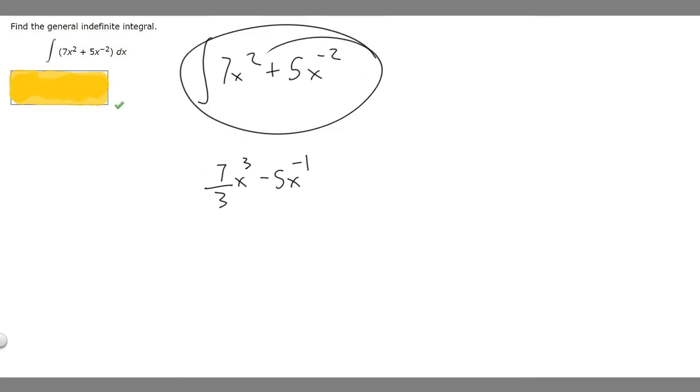Since we're taking the antiderivative, we've got to add a constant. So we add c to it. So when we add c, this is going to be our answer. The answer to this problem is 7 over 3 times x cubed minus 5x raised to the minus 1 plus c.